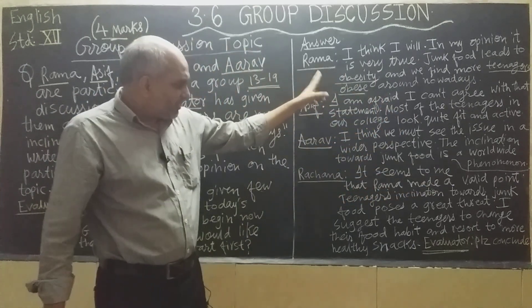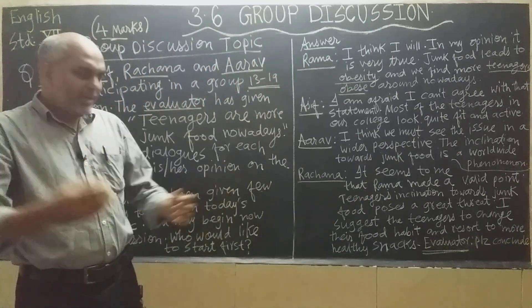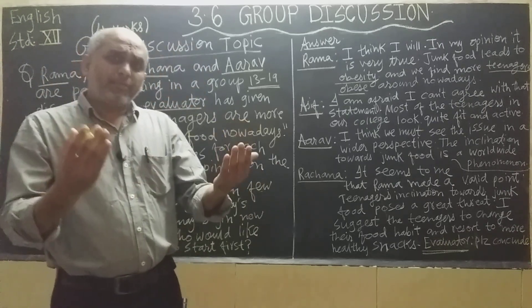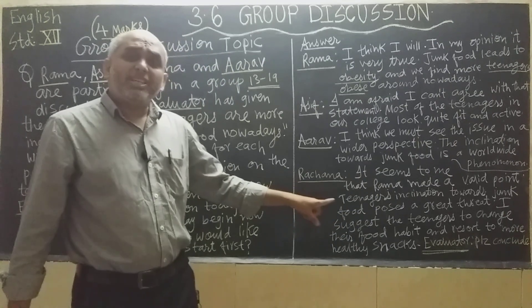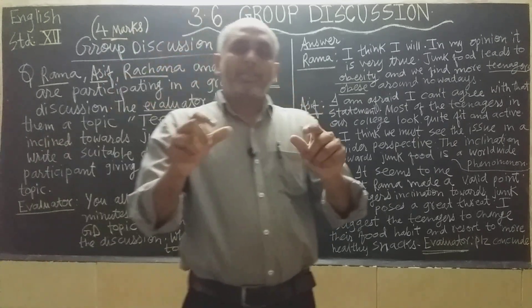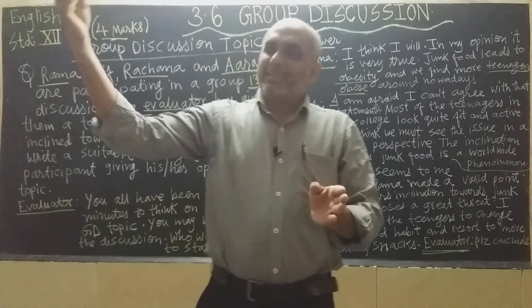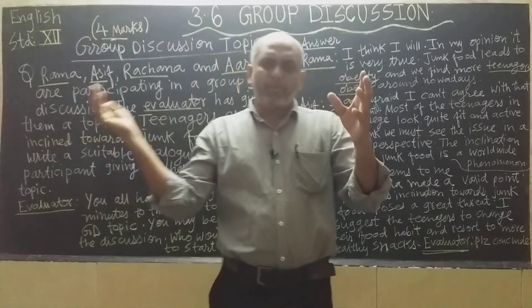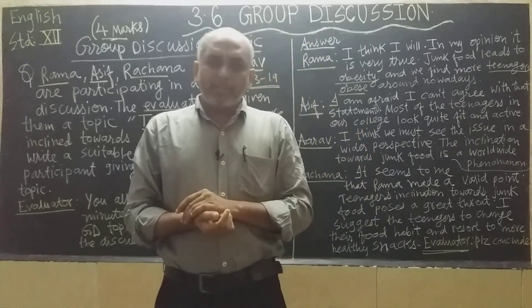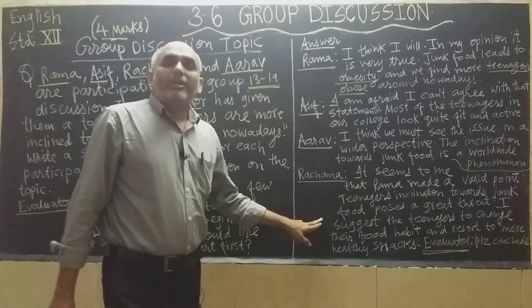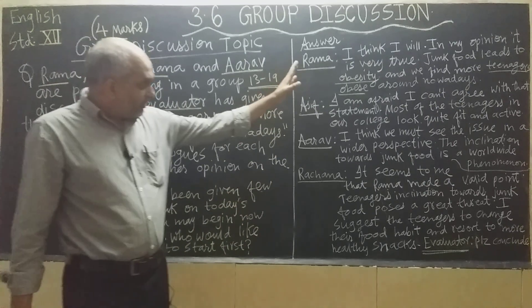Rachana validates Rama's point — that teenagers are more interested in junk food — calling it a very serious threat. She notes that teenagers may become victims of serious diseases because of junk food. She suggests they should change their food habits and prefer homemade food rather than purchasing junk food from the market, as those foods use artificial colors and are unhealthy for the body.